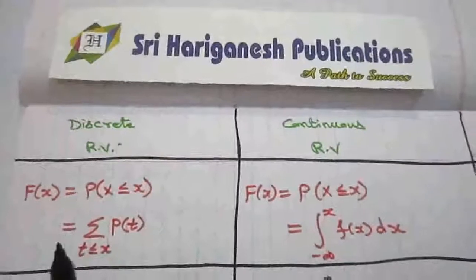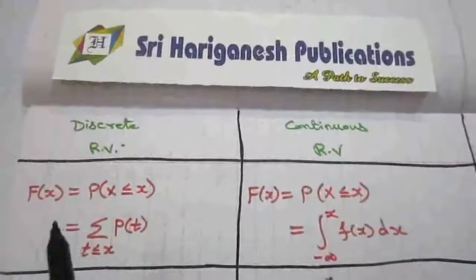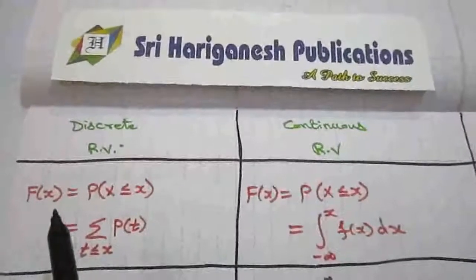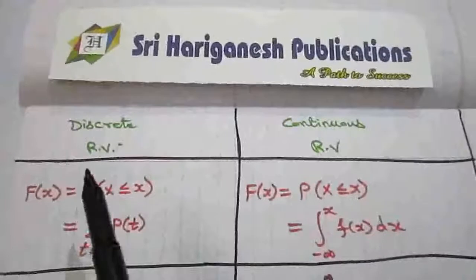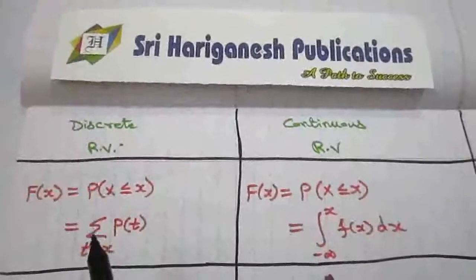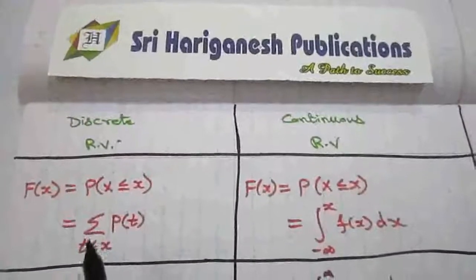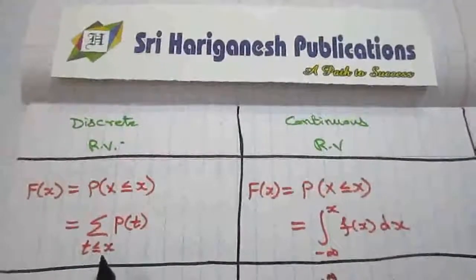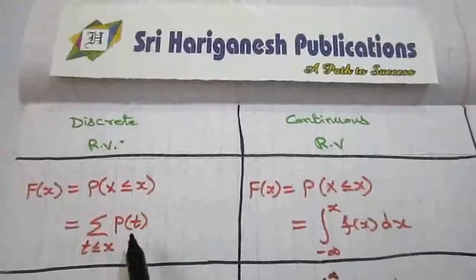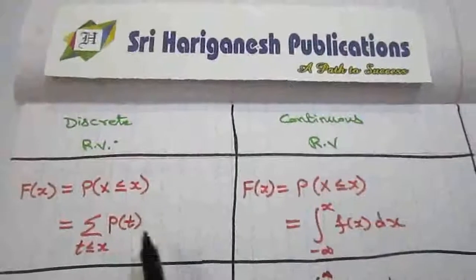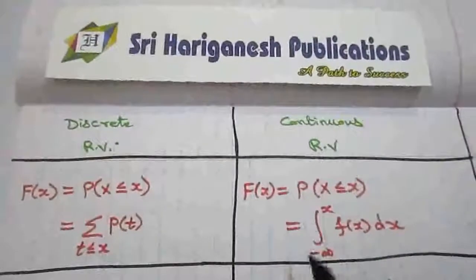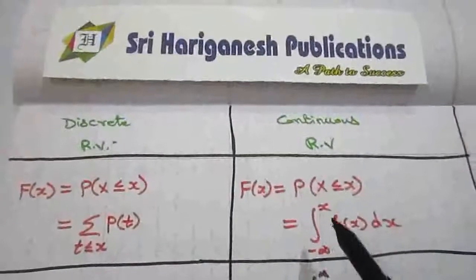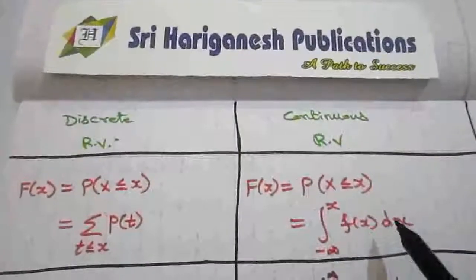The capital F(x) is the cumulative distribution function. For a discrete random variable, it is the summation over t ≤ x of p(t). For a continuous random variable, it is the integral from minus infinity to x of f(x) dx.